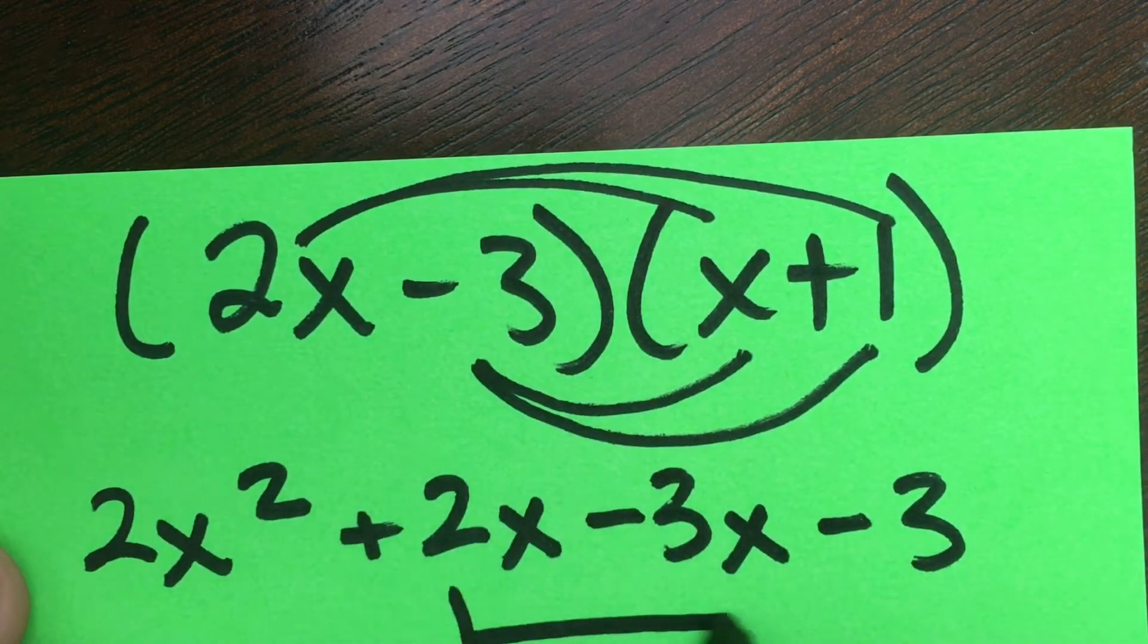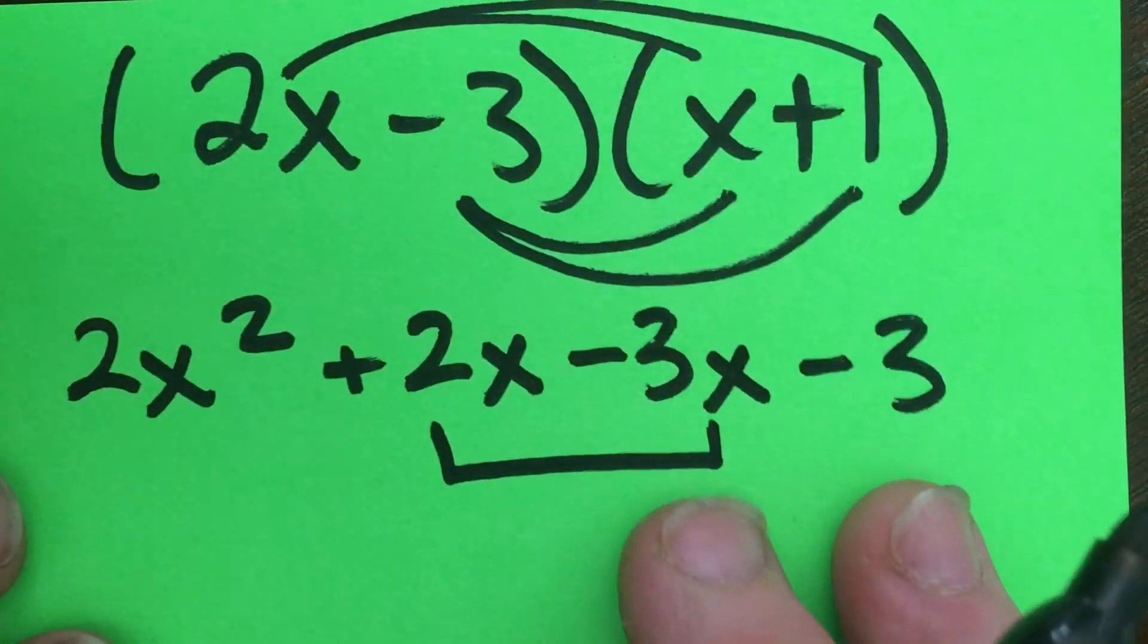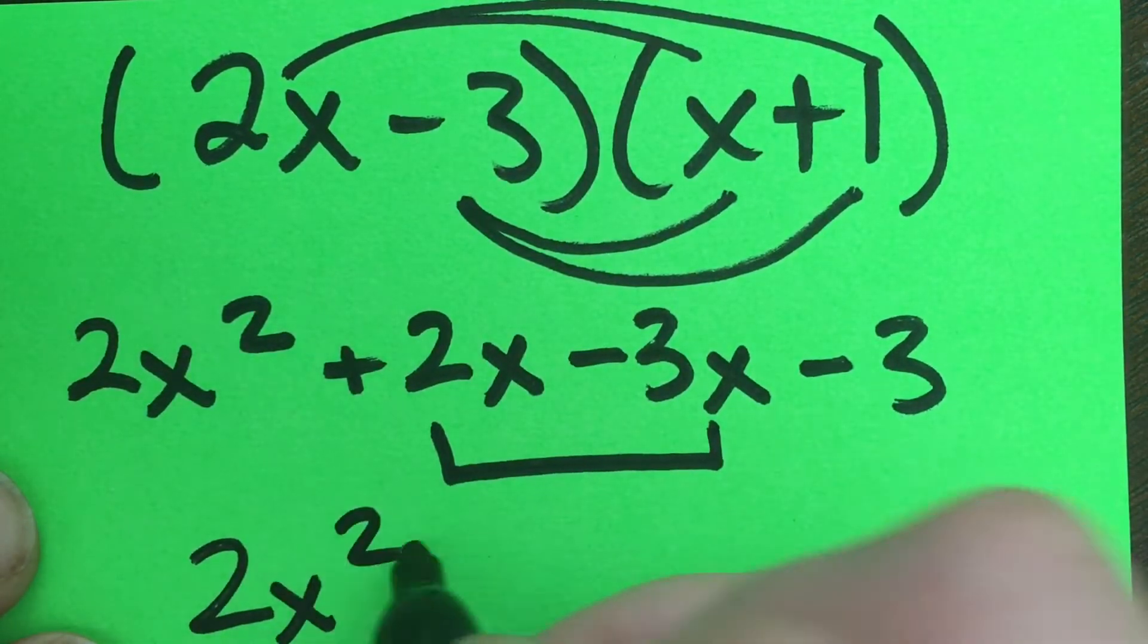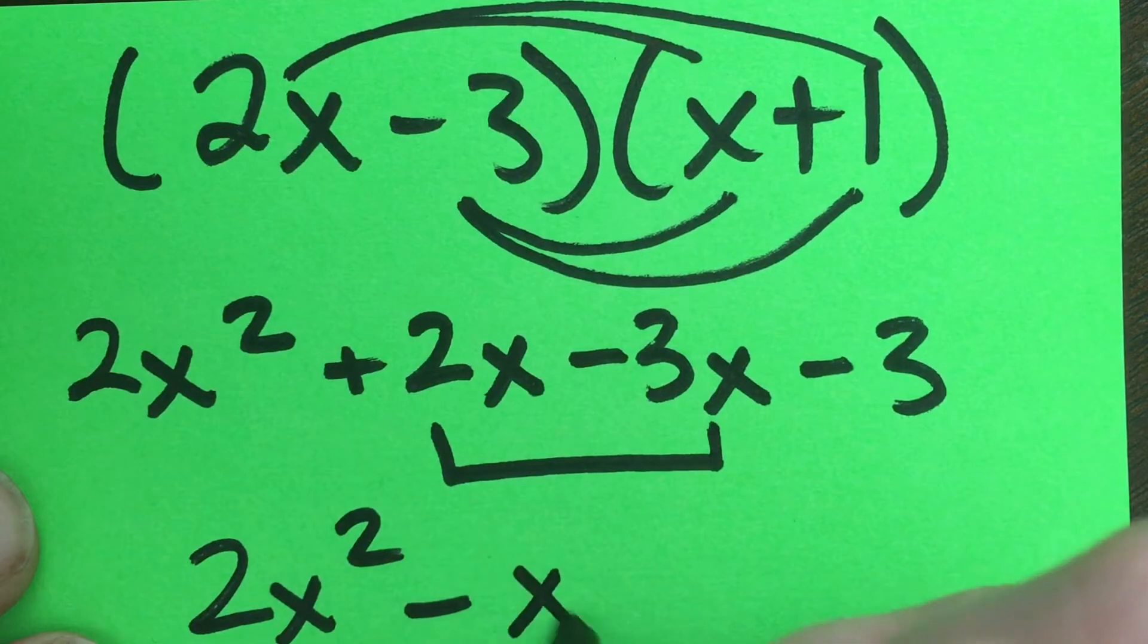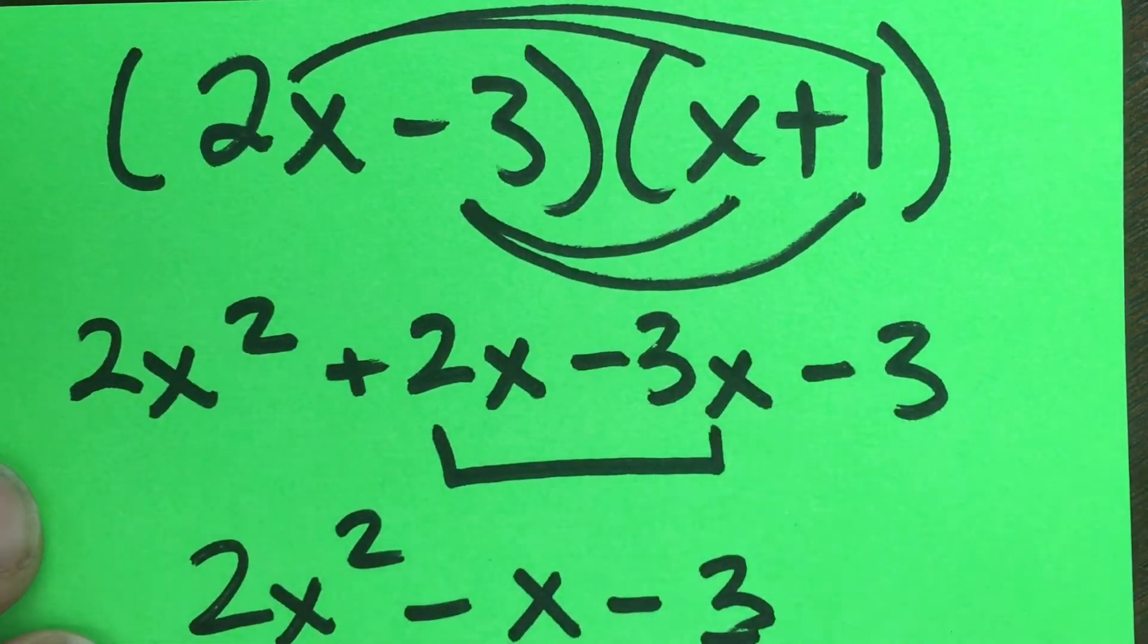When we go to combine like terms, our two middles are like terms, and so we're left with 2x squared minus 1x, but I'll just write x minus 3.